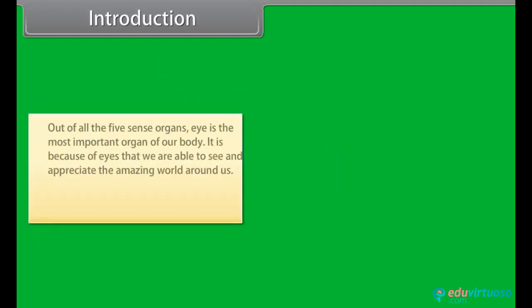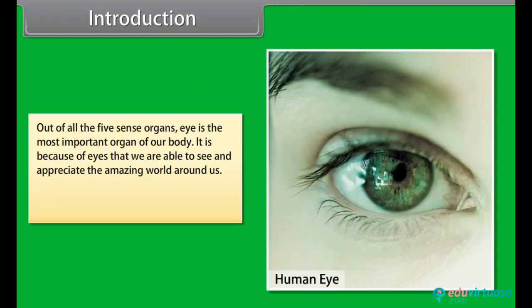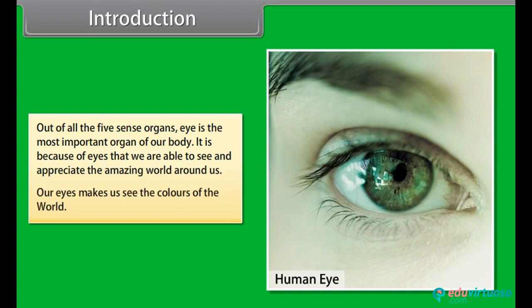Out of all the five sense organs, the eye is the most important organ of our body. It is because of eyes that we are able to see and appreciate the amazing world around us. Our eyes make us see the colors of the world.